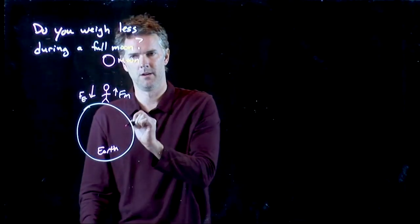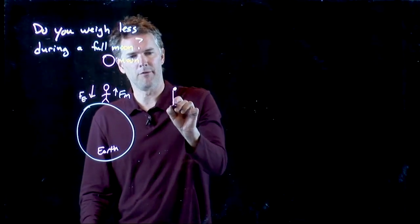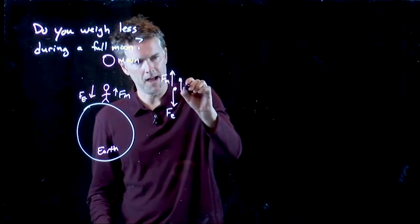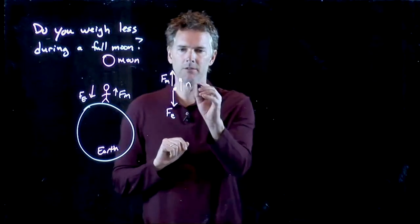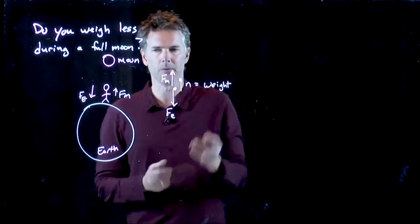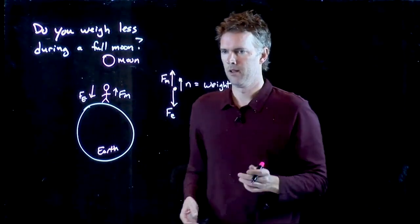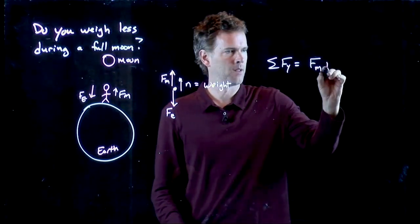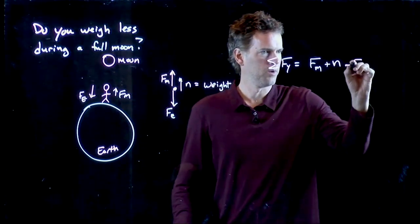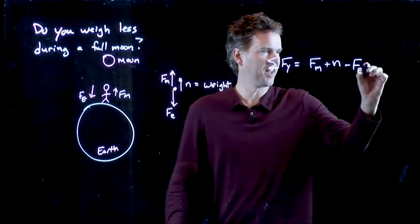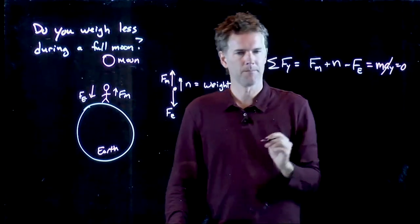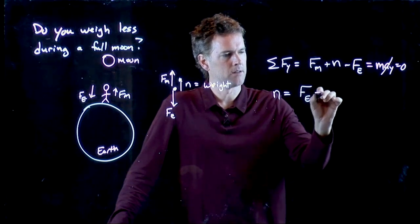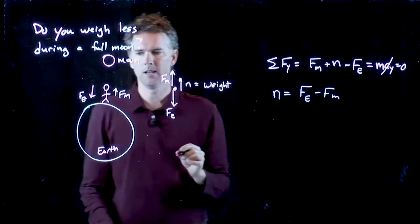Let's see if we can calculate this picture now. So I have a few things that are acting on me. I have the force of the Earth pulling down. I have the force of the moon pulling up. And I also have the normal force N of the ground pushing up on me. And that normal force N is what we call our weight. How hard is the ground or the scale underneath me pushing up on me? So we've got sum of the forces in the Y direction. What do we have? We have F of the moon going up. We have N of the normal force going up. We have the force of the Earth pulling us down. If we're standing there without accelerating, then this is equal to zero. And so now we can solve this for N. N is just going to be Fe minus Fm.